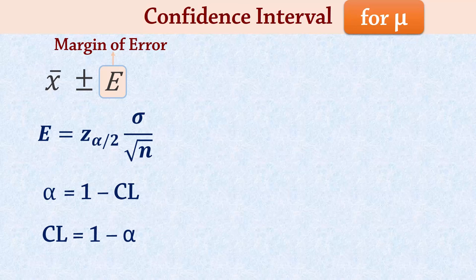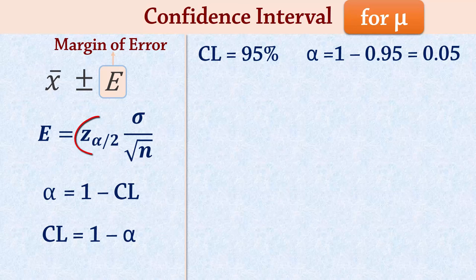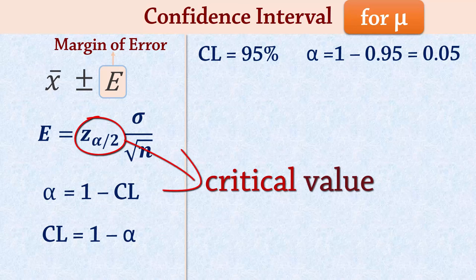So if the confidence level is 95%, alpha will be 1 minus 0.95, which equals 0.05. Z alpha over 2 here is a single value called the critical value. It can be found in the normal tables or by using software.